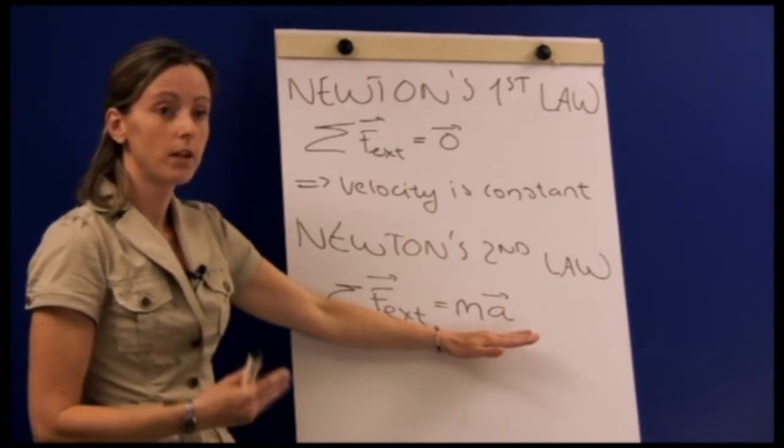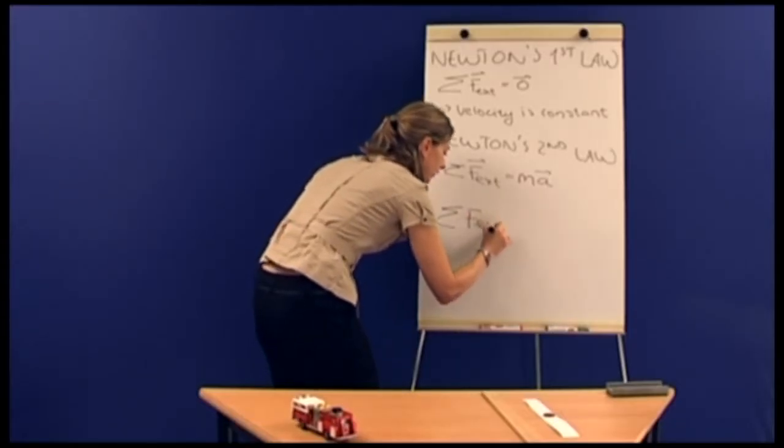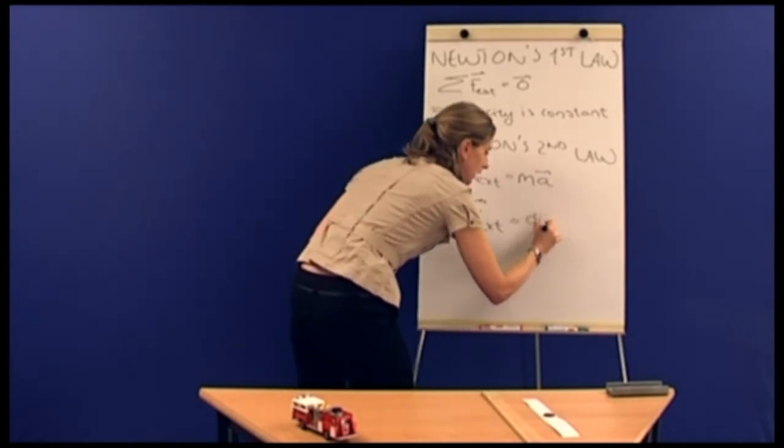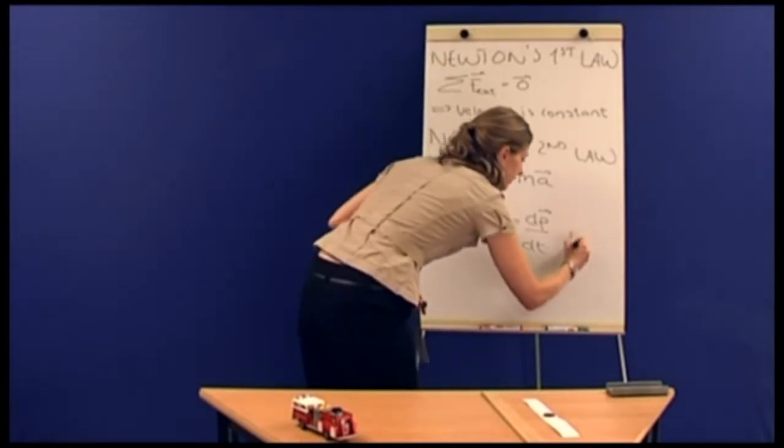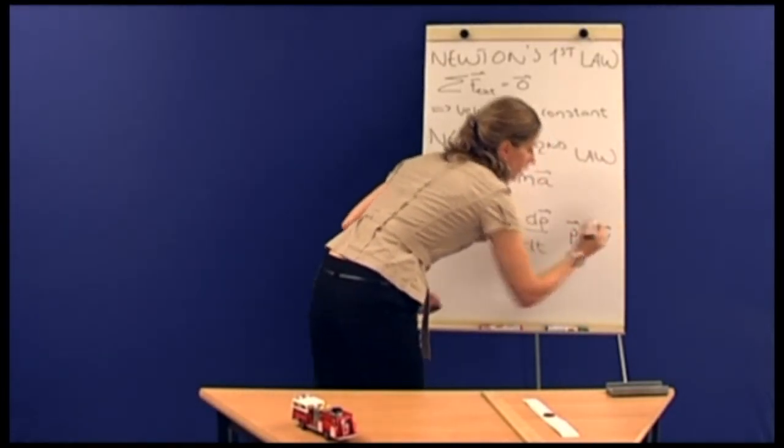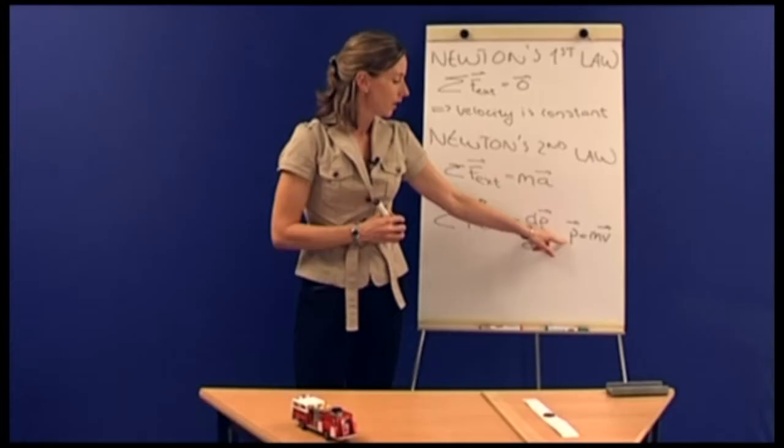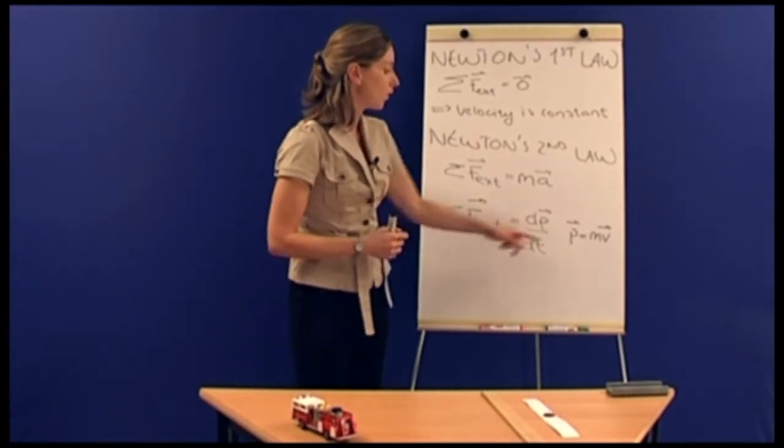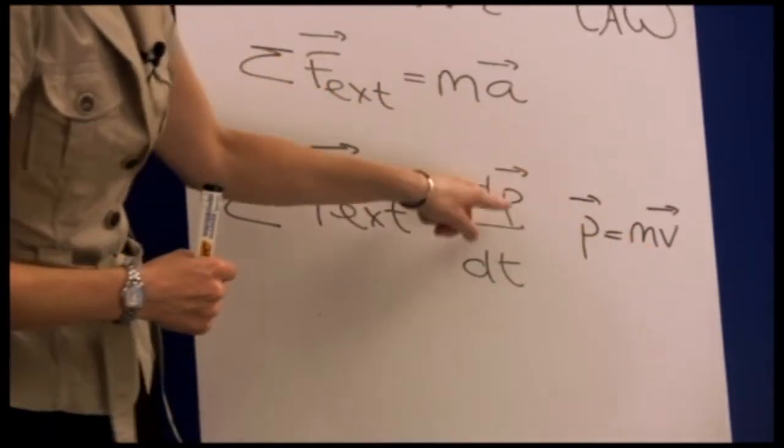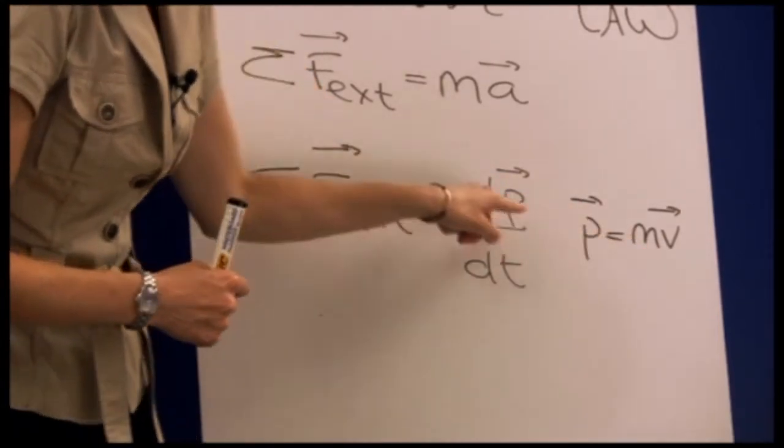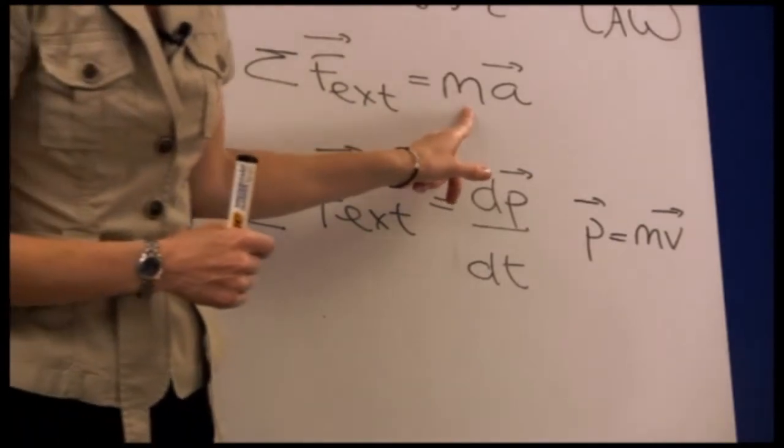So this law here can actually be derived from an even more general law, also stated by Newton, which is that the sum of external forces is equal to dp dt. And p is the momentum of the system, and the momentum is equal to the mass times the velocity. So in French, this quantity here is actually called quantité de mouvement, and that was the term that Newton originally used to describe, he called it quantity of motion. And if you take this quantity, the m times v, and then you plug it into this formula, you know that the mass is constant, so the mass can go outside, and then you just have the derivative of the velocity times the mass, which is equal to the mass times the acceleration.